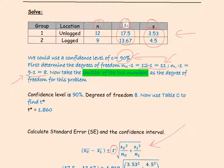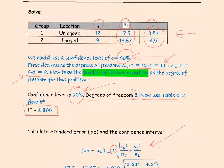The smaller of the two degrees of freedom is what we use for this problem. We set the confidence level to 90%, use Table C with a confidence level of 90% and degrees of freedom 8 — looking at the 8th row — and we find that t* for this problem is 1.860.